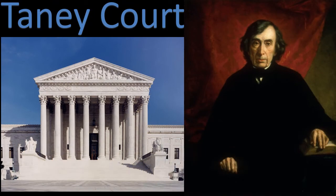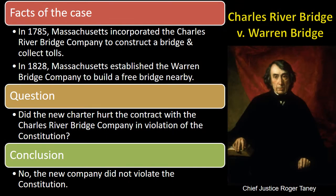Roger Taney served as the fifth Chief Justice of the Supreme Court from 1836 to 1864. He was an advocate of Jacksonian democracy. The Taney Court did not strongly break from the precedents of the Marshall Court. Taney is best known for the Dred Scott decision, which ruled that African Americans could not be citizens. Taney Court decisions regarding economic issues and separation of power set important precedents, and the Court's ability to adapt regulatory law during a time of technological and economic progress was significant. The majority opinion in the Charles River Bridge v. Warren Bridge case signaled the Court's shift towards states' rights and away from the nationalism of the Marshall Court.